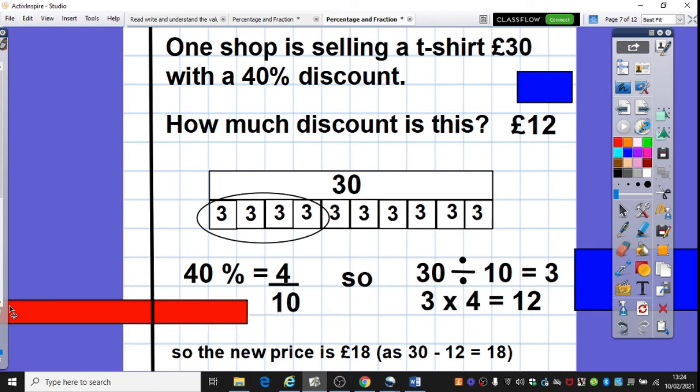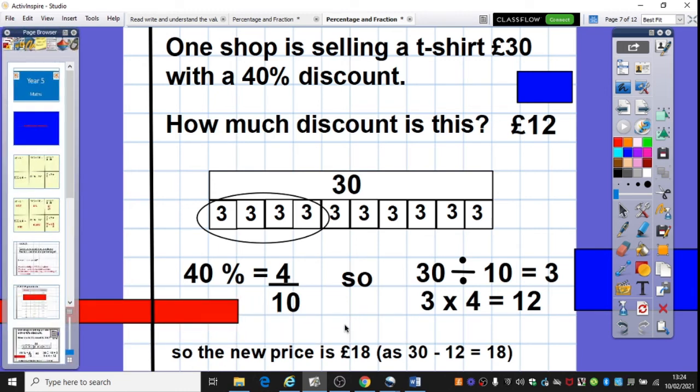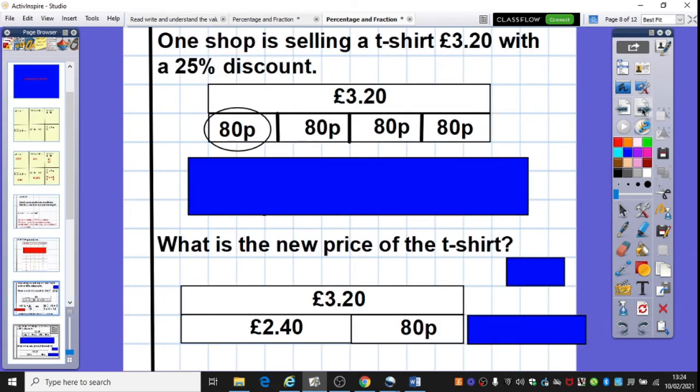So what we may be asked then is what the price of the new t-shirt would be or what the new price would be of this t-shirt. So if it's got a discount of £12, that means they're taking £12 off of the original price. So 30, take away 12, like we've got down here, is 18. So the new price would be 18. So once you've found that discount, you take it away from the original price to find the new cost of the t-shirt.